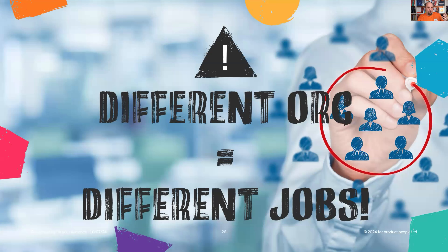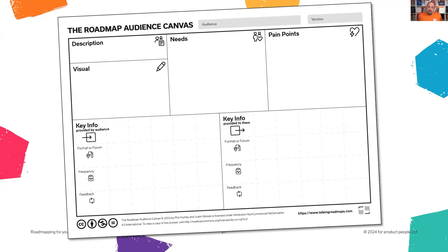The problem is those different audiences and jobs may vary from one organization to another. The CEO in your organization might have a different set of jobs to be done for the roadmap than the one I just described. What my co-host and I realized is we can't just say 'here's the perfect view for the CEO.' What we actually have to do is understand that audience. So we created a tool called the Roadmap Audience Canvas for identifying the needs, pain points, information they give us, information we give them, and how we close that feedback loop — so we can design the right roadmap for them.